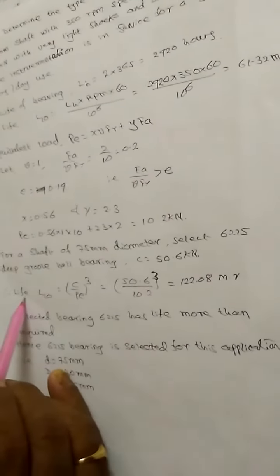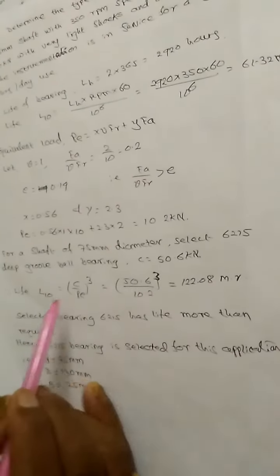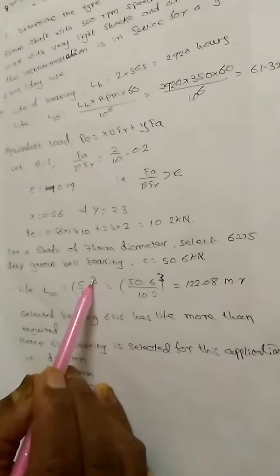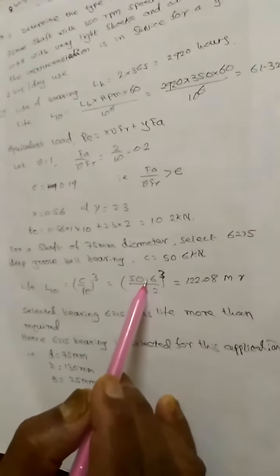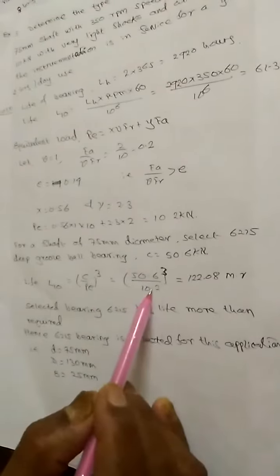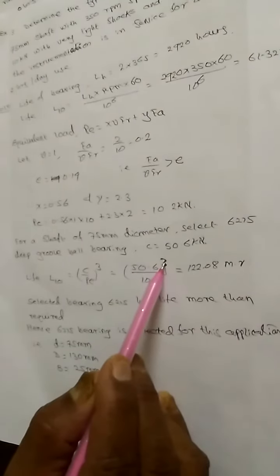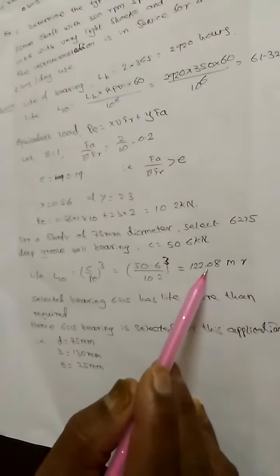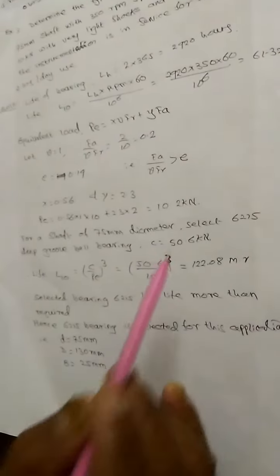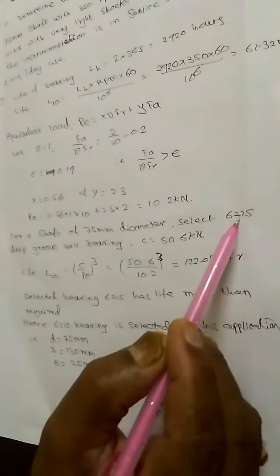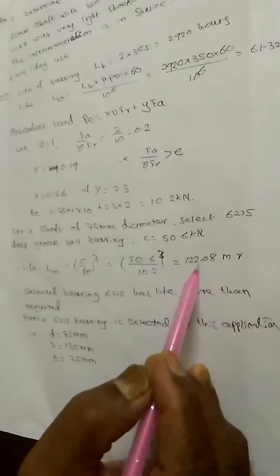Then I substitute the values in the life of the bearing, L10 as C by P raised to 3. C is chosen from the table already here and P we know value. When I substitute this raised to 3 because of ball bearing, I will get 122.08 million revolutions. That means this bearing is having a life of 122 million revolutions.